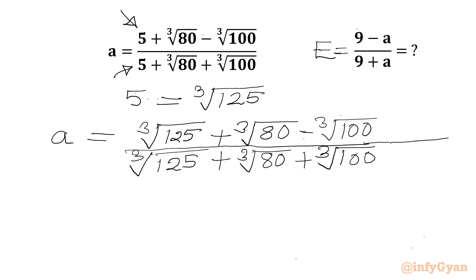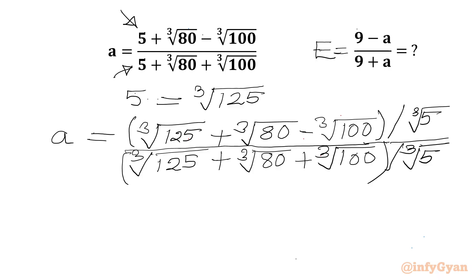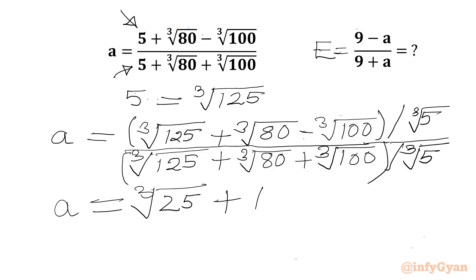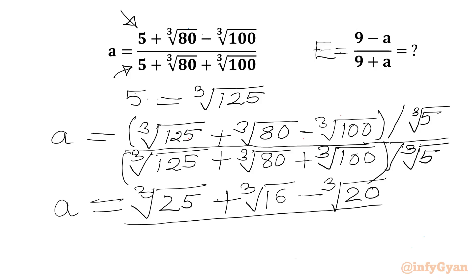Now I will divide our numerator and denominator by cube root of 100. So I can write a will become cube root of 125 over cube root of 25, plus cube root of 80 over cube root of 16, minus cube root of 100 over cube root of 20 in the numerator, and in the denominator cube root of 25 plus cube root of 16 plus cube root of 20.